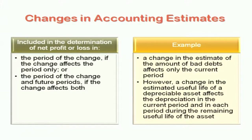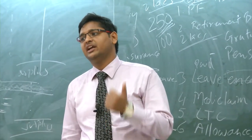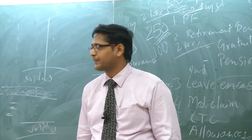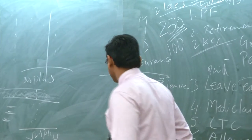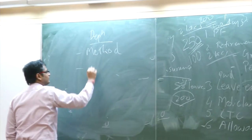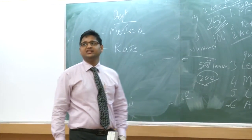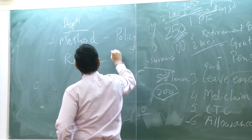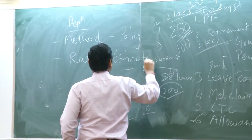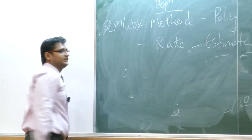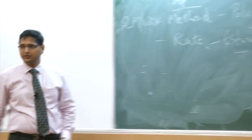A change in useful life of a depreciable asset affects depreciation in the current year and future periods both. Depreciation can change because of a change in method or because of a change in rate of depreciation. Which of these is a change in policy and which is a change in estimate? Method is policy; rate is estimate. So if you change from SLM to WDV or WDV to SLM, it is a change in accounting policy.